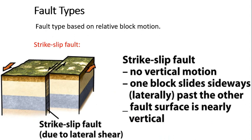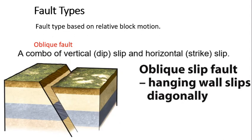There is also a strike-slip fault, where the fault moves parallel — either in the same direction at different velocities or in opposite directions at different velocities. Next is the oblique fault, which involves a combination of both vertical and horizontal movements, resulting in an oblique fault. There is a vertical motion of dip and a horizontal motion of strike.